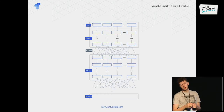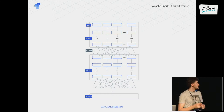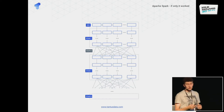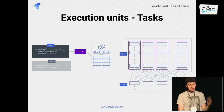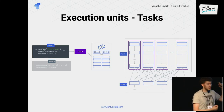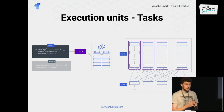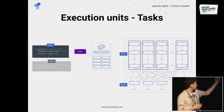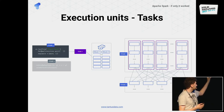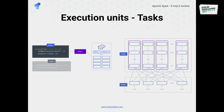Your application usually consists of multiple stages and multiple shuffles. The actual execution unit in Spark is a task. A task consists of code which is supposed to be run on your data, and a piece of data. So a single block in HDFS and the code which is supposed to be run on it is a task. And each stage consists of multiple independent tasks.